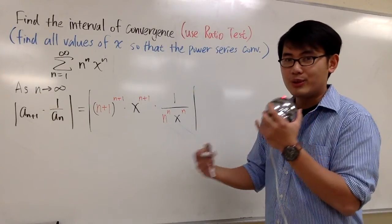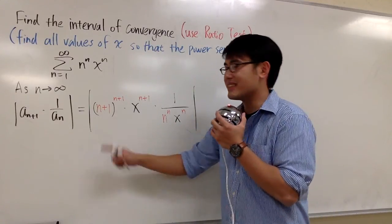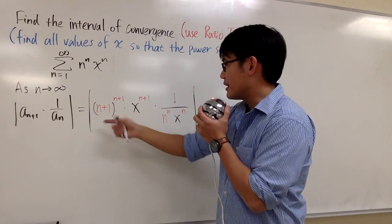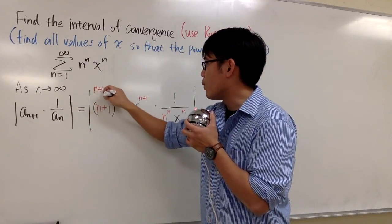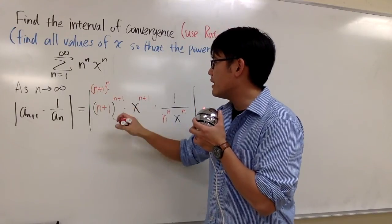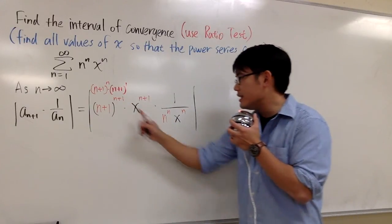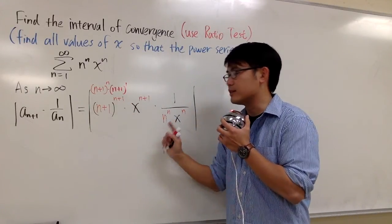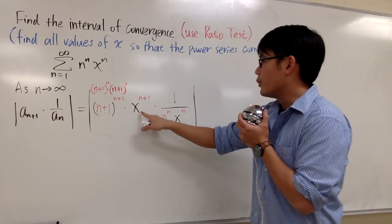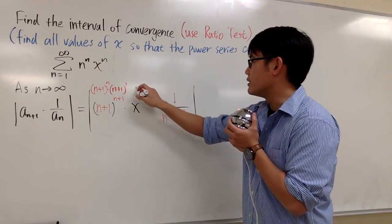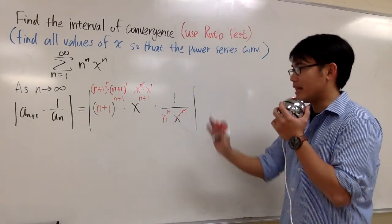Let's simplify this expression. This part is slightly more complex, but we can separate the exponents: write (n+1)^{n+1} as (n+1)^n times (n+1)^1. We can also write x^{n+1} as x^n times x^1. We get to cancel the x^n terms — that's pretty good.